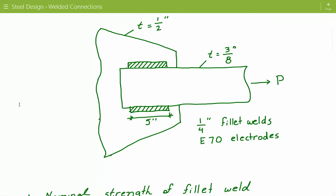Since the welds are placed symmetrically about the axis of the member, this connection can be considered a simple connection — there's no additional load due to eccentricity, which simplifies things.